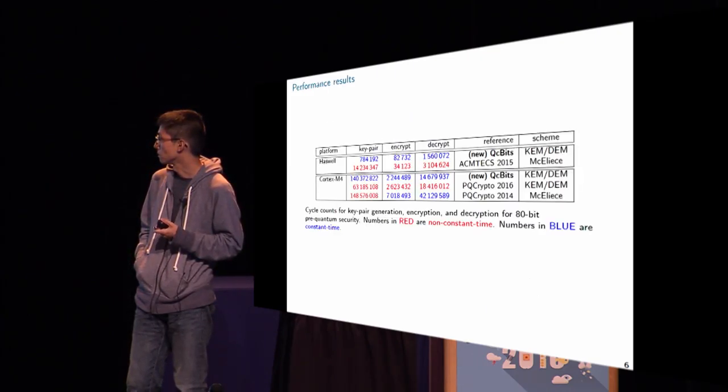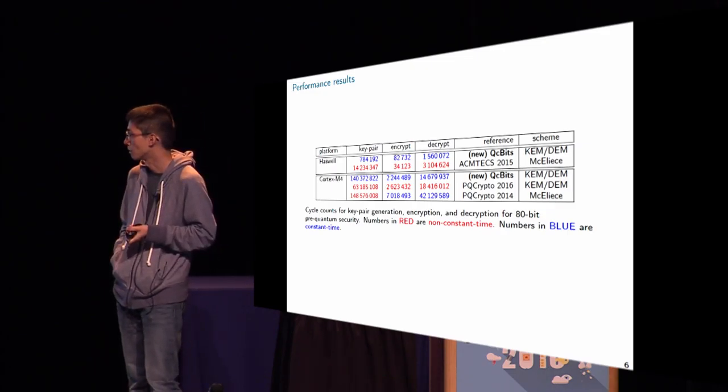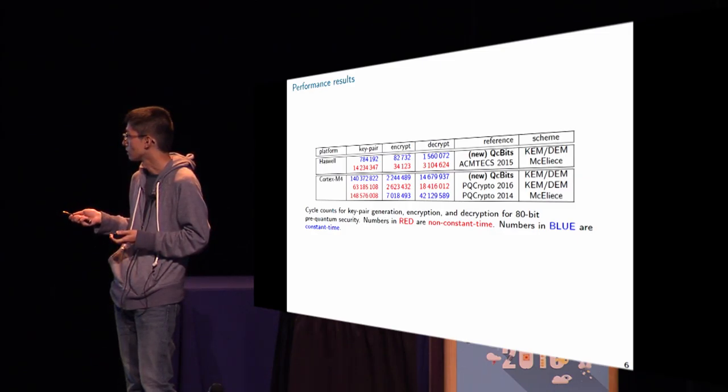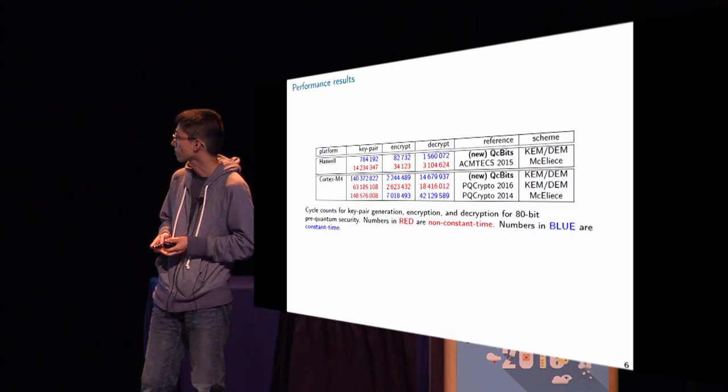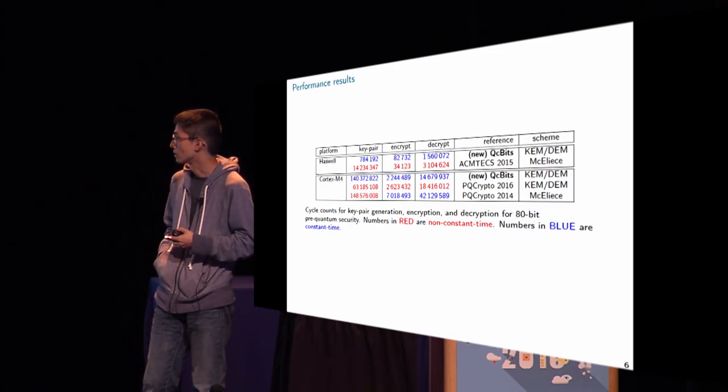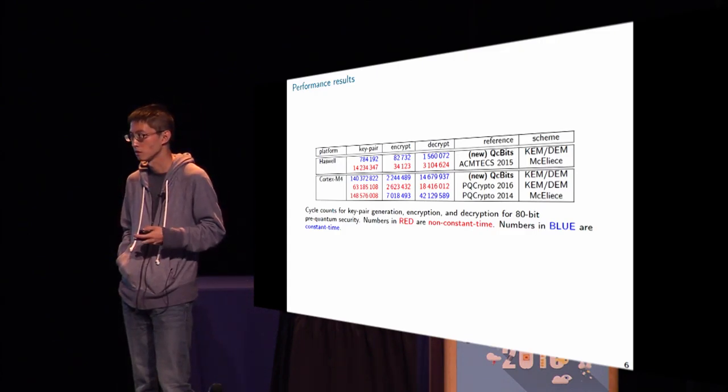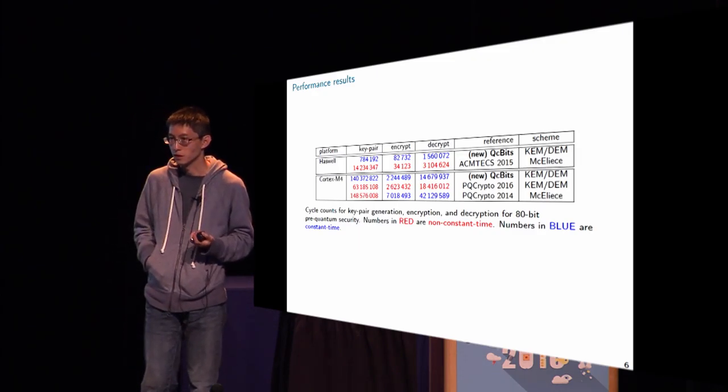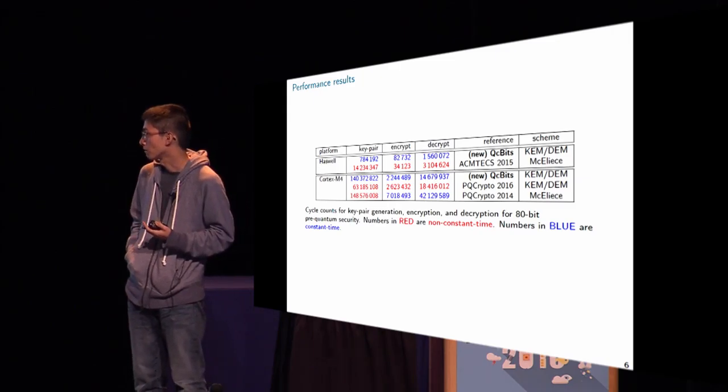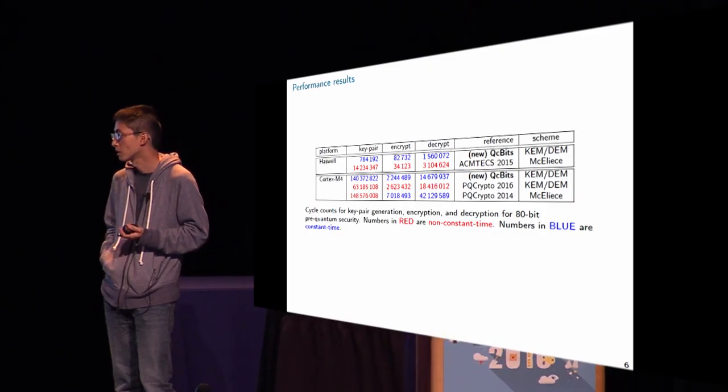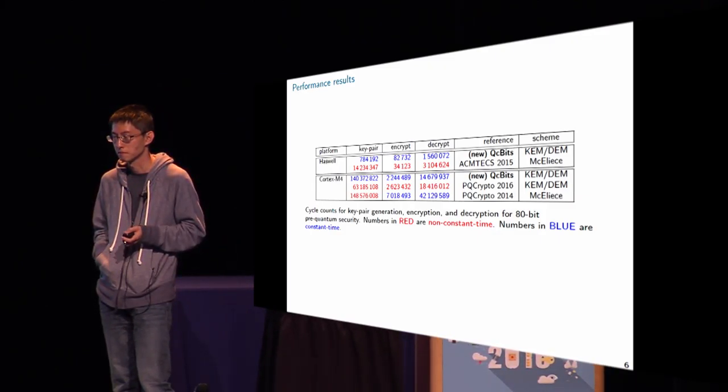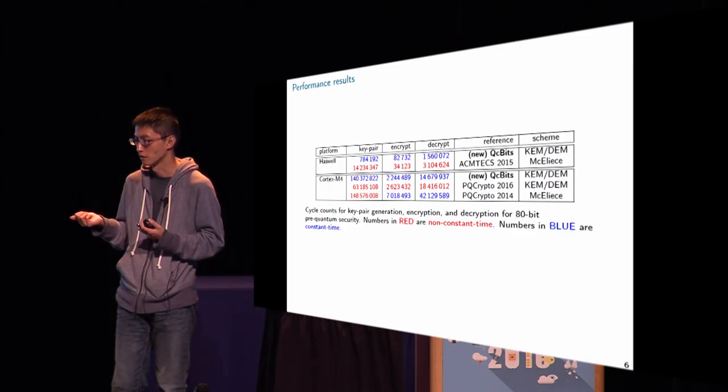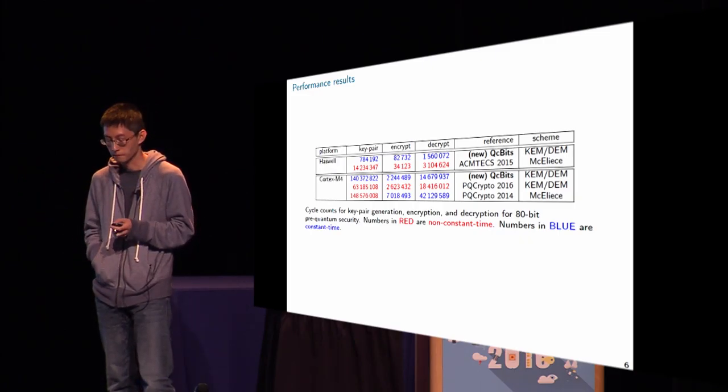So I wrote QcBits, and QcBits provides constant time key generation, encryption and decryption. So everything is constant time. And it works for many platforms, not just platforms without caches. So essentially, all reasonable 32 or 64-bit platforms can be used. Now let's see some performance results. So here I have a table for the 80-bit pre-quantum security parameter. And today I'll focus on the decryption. So what's being shown here is basically that QcBits is much faster than previous implementations, either constant time or non-constant time implementations. And this is because I'm doing computation in a very different way from the previous works. And you might have already noticed that I didn't show higher security parameters. And this is because of some annoying issue of failure rates.